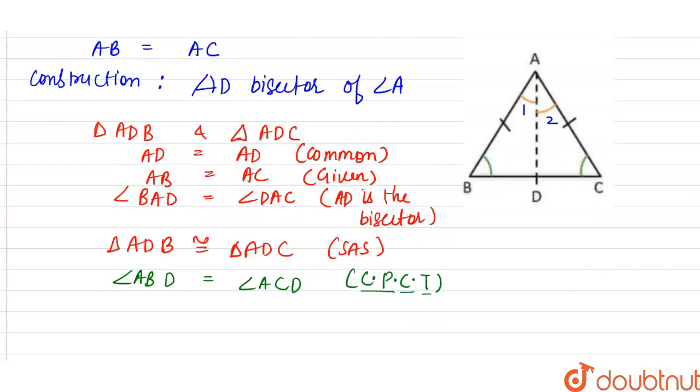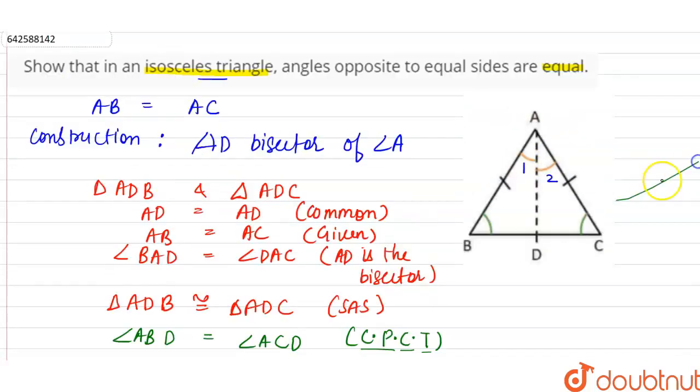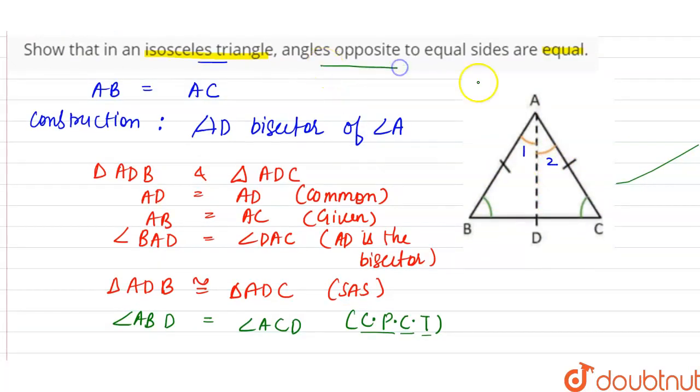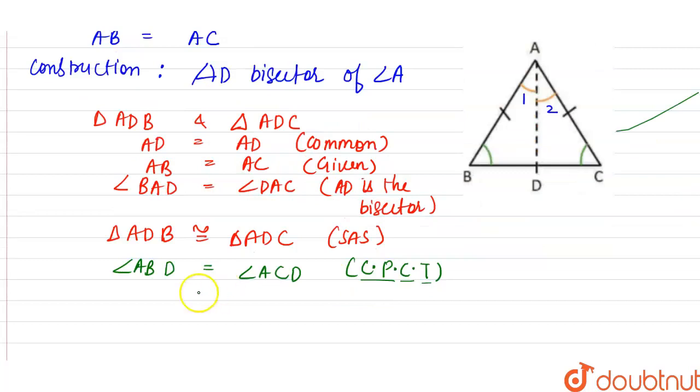So we can say that these two angles are equal to each other. Now these two angles are the angles which are opposite to equal sides, so we can say that it is proved that angles opposite to equal sides are also equal. So angle B is equal to angle C, hence proved.